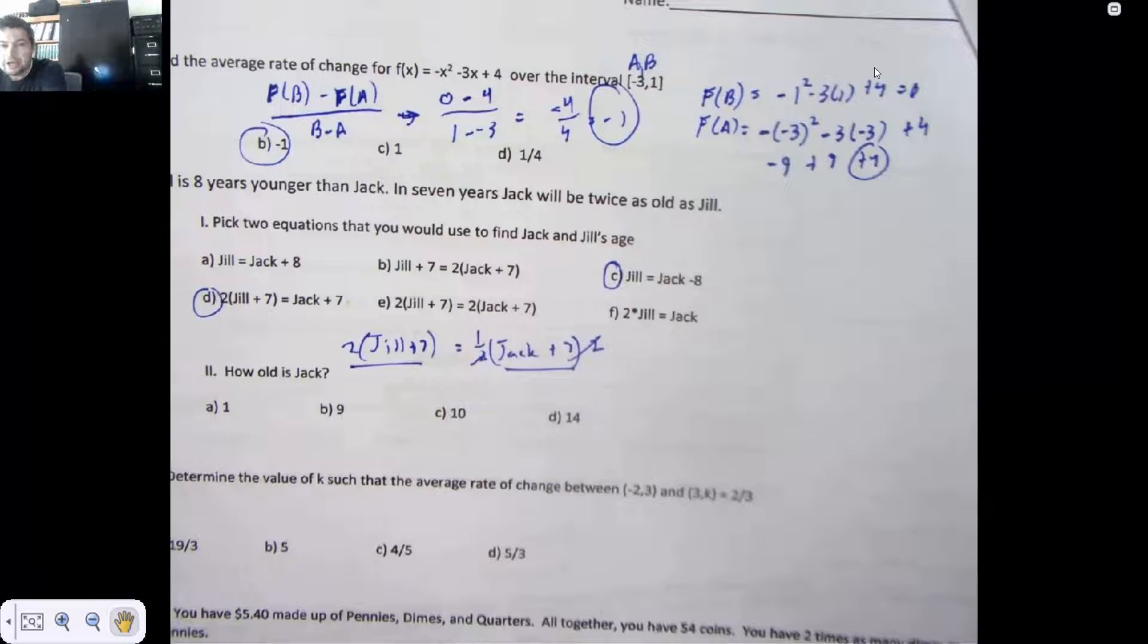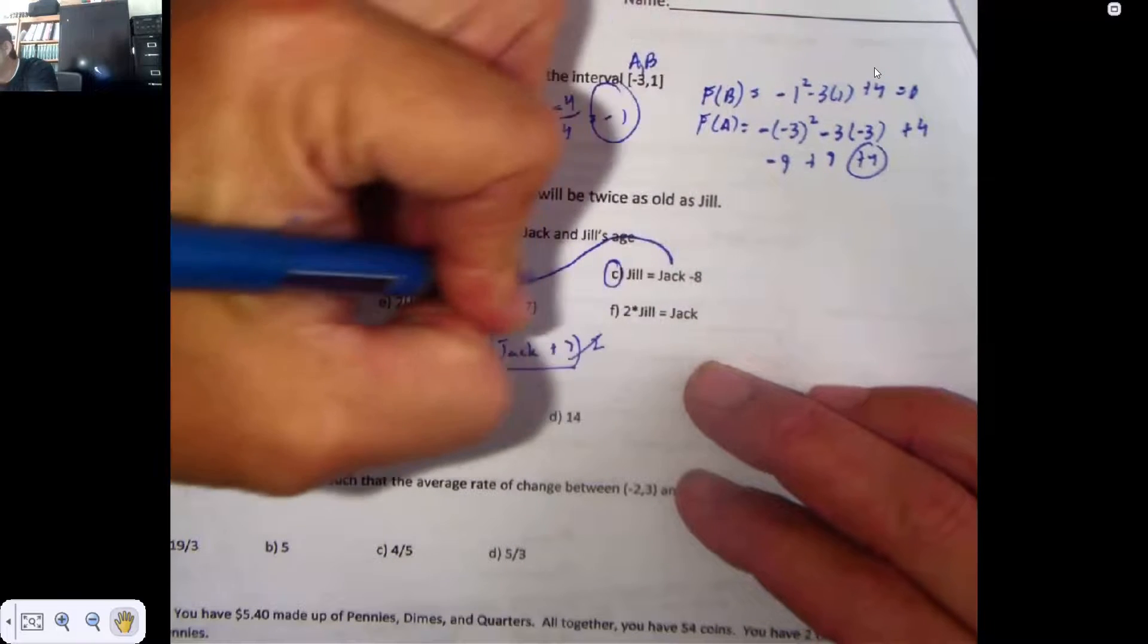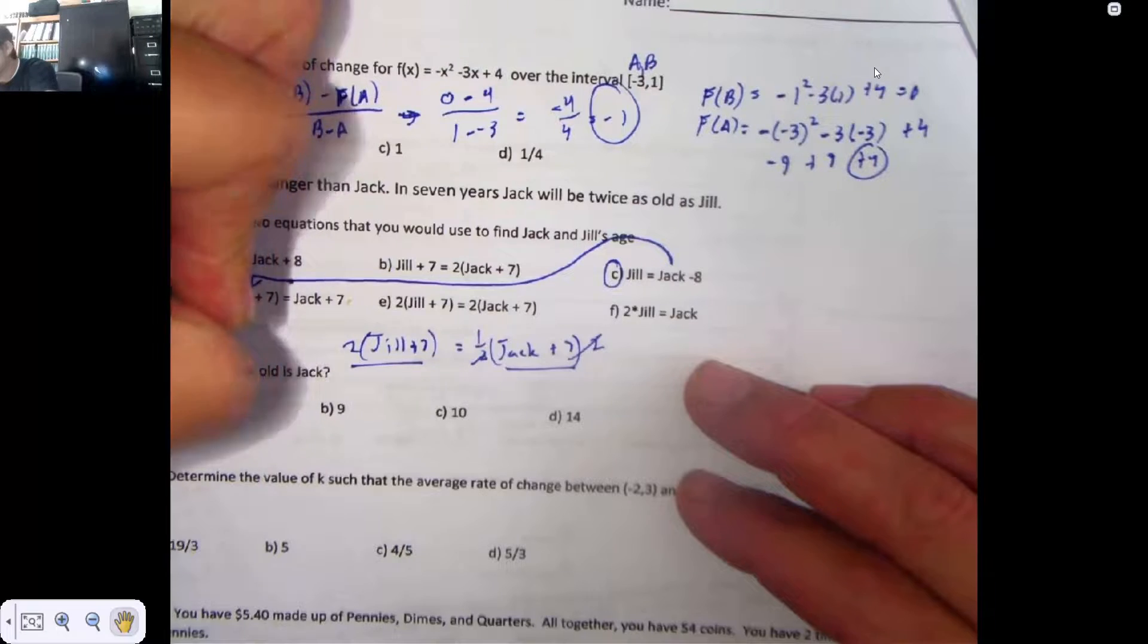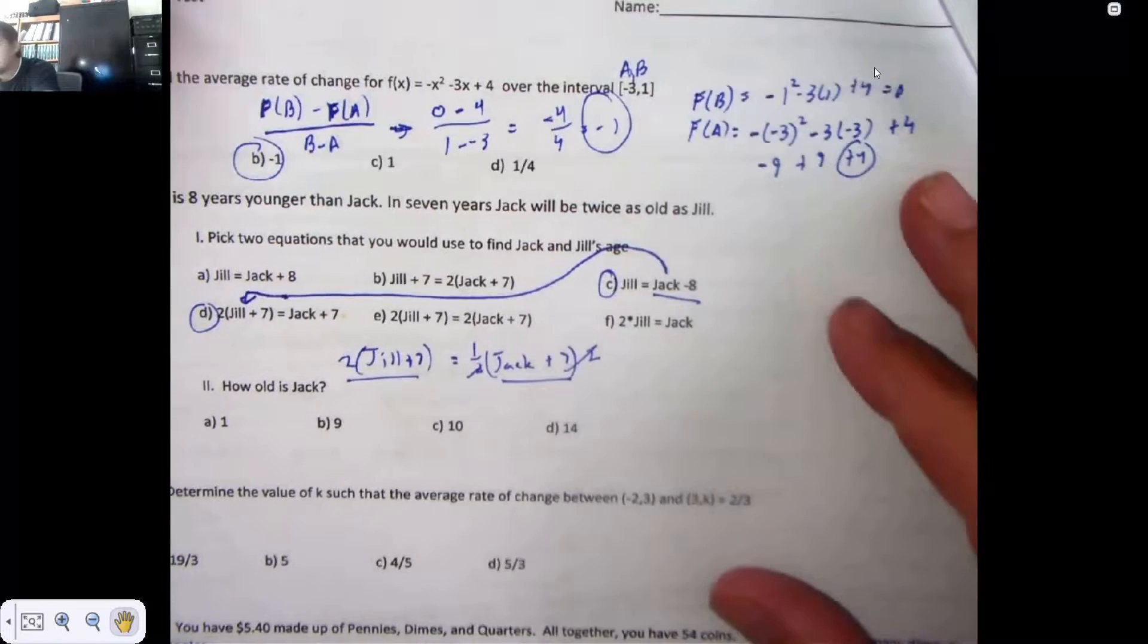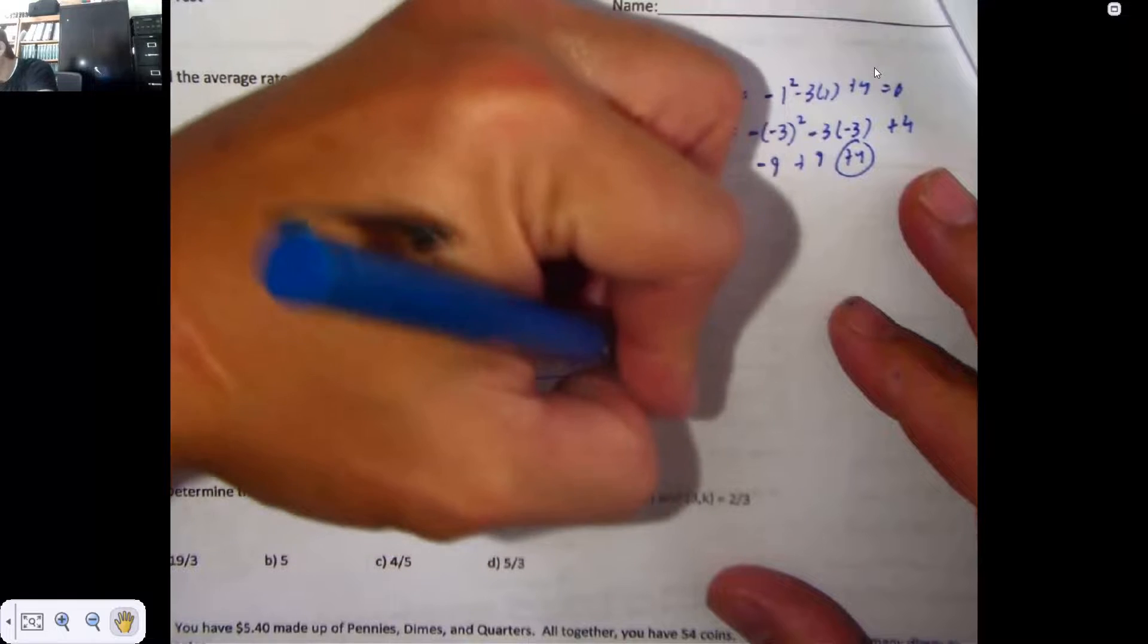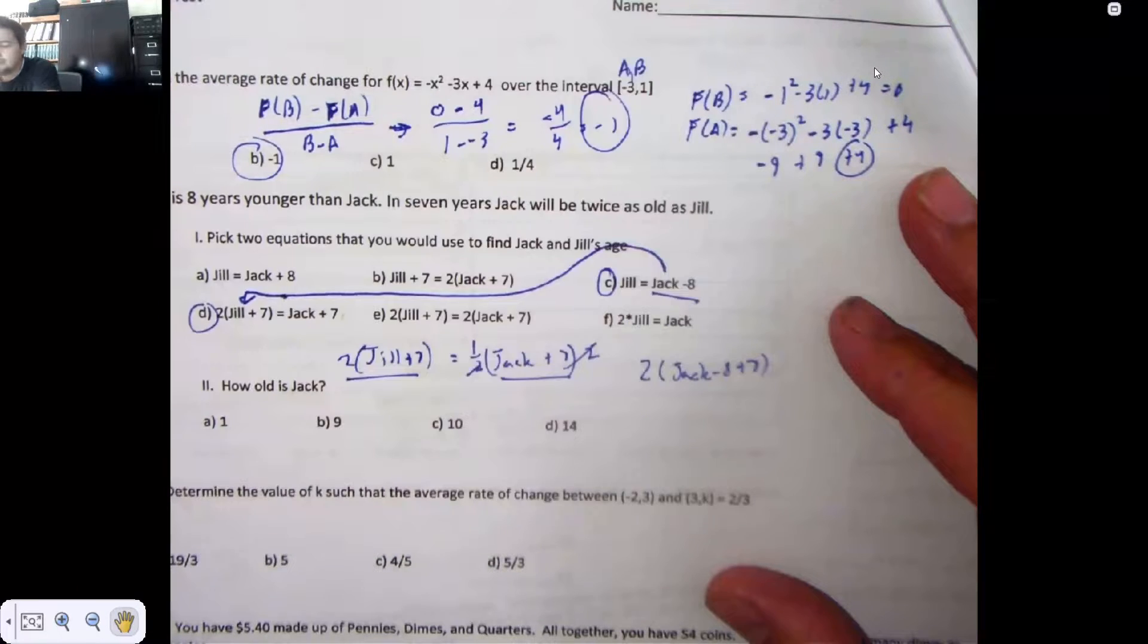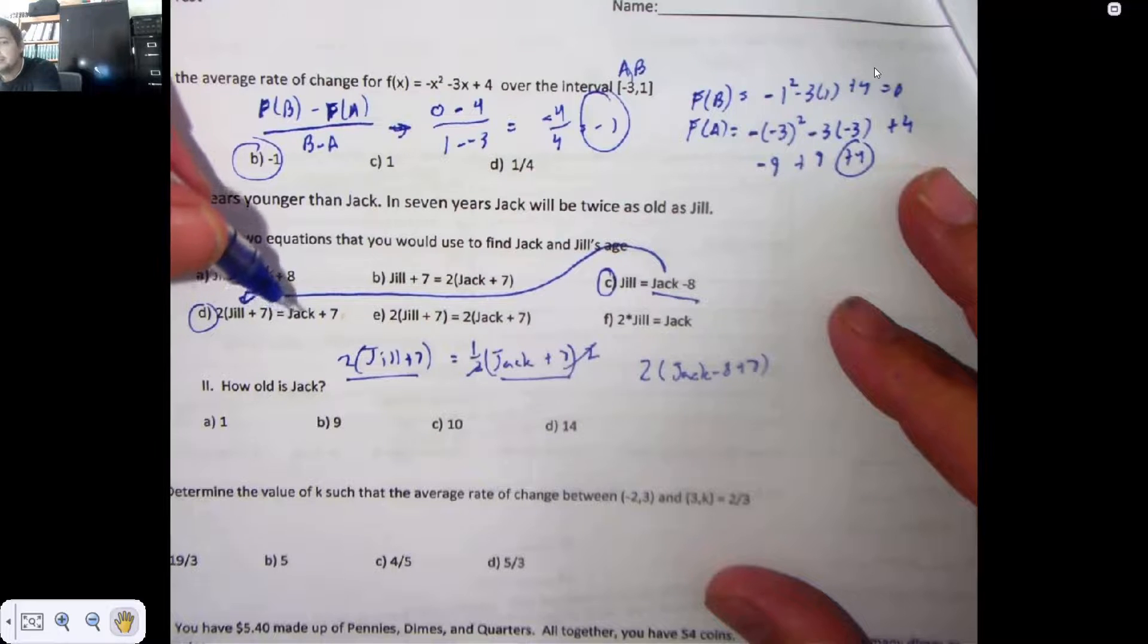How old is Jack? Well, everywhere that I see Jill, I can replace her with Jack - 8. It's called the substitution property. I can do that. So twice a Jack minus an 8 adds 7, because I'm just copying stuff down, must equal a single Jack plus 7.